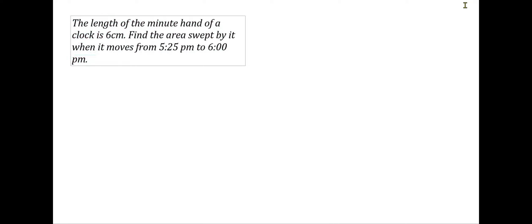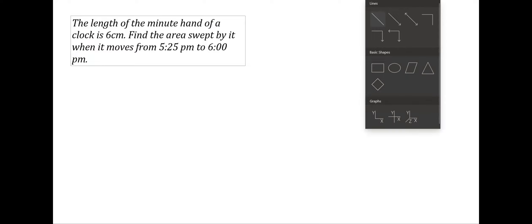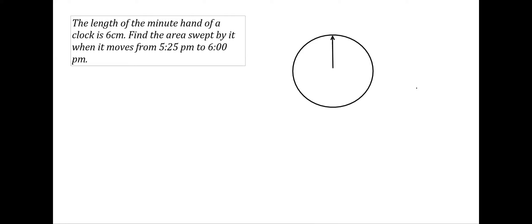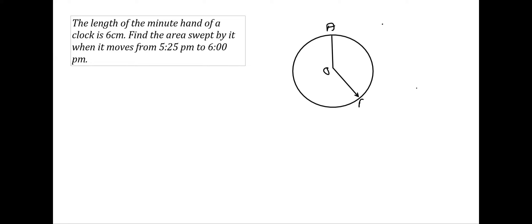The next question: the length of a minute hand of a clock is 6 centimeters. Find the area swept by it when it moves from 5:25 PM to 6 PM. Let's draw a clock to understand. At 5:25 the minute hand is at the 5, and at 6 PM it reaches the 12. We need to find the area swept by this minute hand over those 35 minutes.